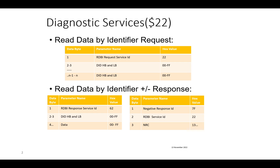Let's look at the request format. The first byte is 0x22, the service ID, followed by the DID number as a two-byte value in the second and third bytes. If you want to read more than one DID, each additional DID is appended one by one.